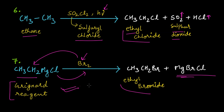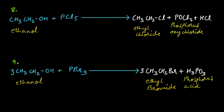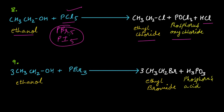The eighth method: when ethanol is treated with PCl₅, you will get ethyl chloride, phosphorous oxychloride, and HCl. Remember that only PCl₅ is used — PBr₅ and PI₅ are unstable and are not used. Only PCl₅ will give ethyl chloride.